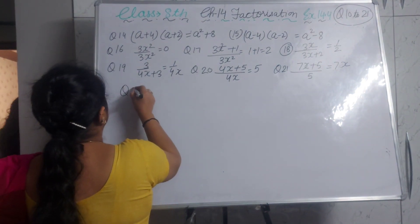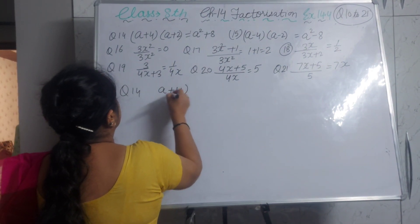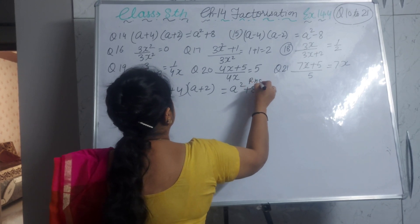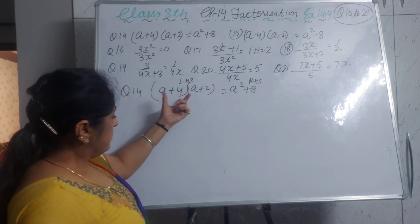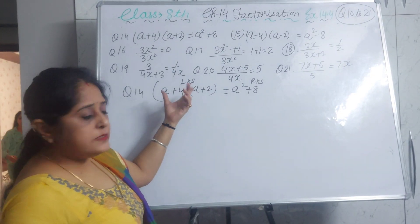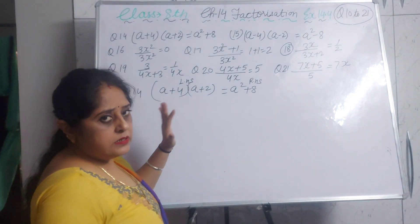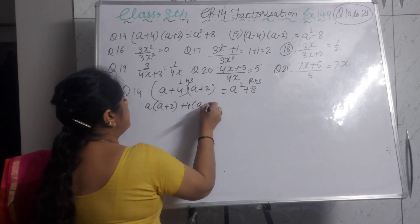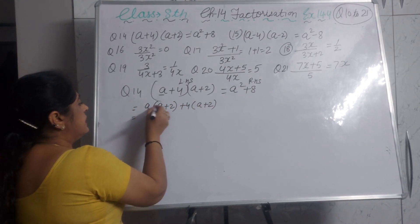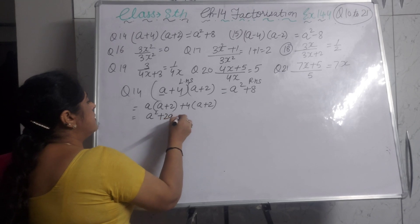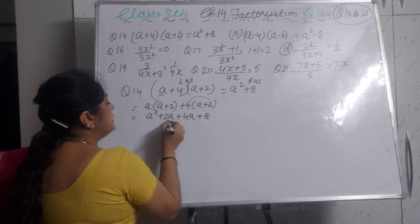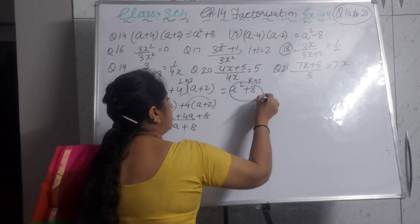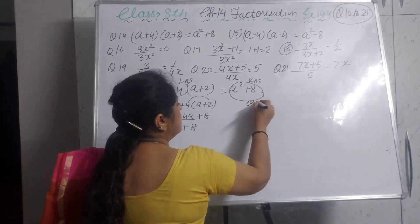Sum 14: (a + 4)(a + 2) = a² + 8. We multiply: a×(a+2) + 4×(a+2) = a² + 2a + 4a + 8. The two like terms 2a and 4a add to 6a, giving the correct answer a² + 6a + 8. The error is that the 6a term is missing from the given answer.